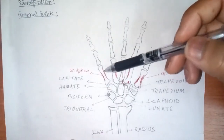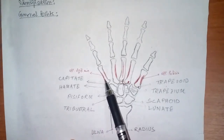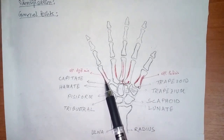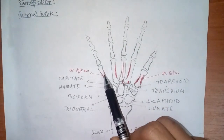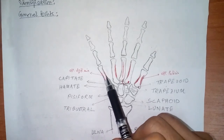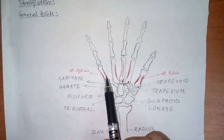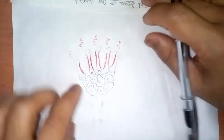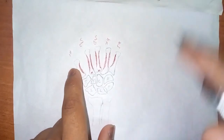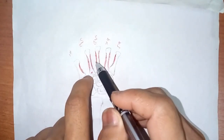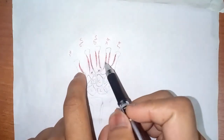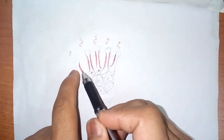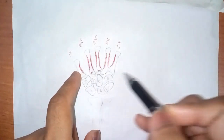As for muscle attachments of the fifth metacarpal bone: the opponens digiti minimi is inserted on the medial side of the shaft. The fourth palmar interosseous muscle is also attached here. We have four palmar interosseous and four dorsal interosseous muscles. Showing the palmar as well as the dorsal interosseous muscles together — there are eight interosseous muscles in total, four palmar and four dorsal.